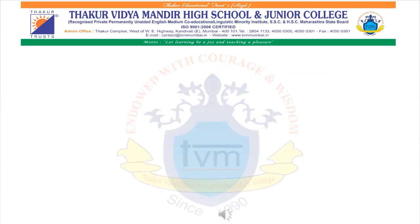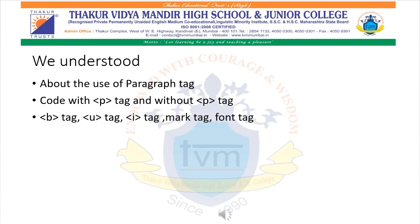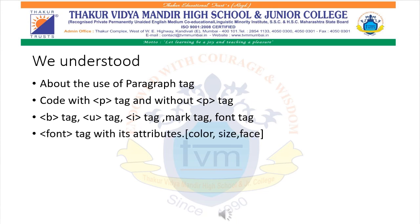In this session we understood about the paragraph tag — how the browser represents text with the paragraph tag and how text appears without the paragraph tag. We also covered five commonly used formatting tags: bold, italic, underline, mark, and font. Along with the font tag, we understood a few attributes to enhance the text by applying color, size, and face. In the next session we will cover examples related to the tags we have learned today.